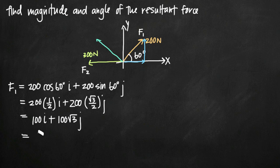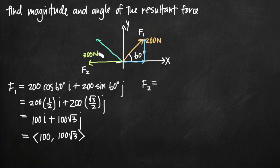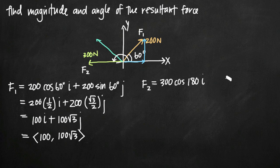So F sub 1 equals 100i + 100√3 j, which we can also write in vector notation as ⟨100, 100√3⟩. Now for F sub 2: its magnitude is 300 newtons and it acts along 180 degrees. So F sub 2 equals 300 times cosine of 180° times i, plus 300 times sine of 180° times j.